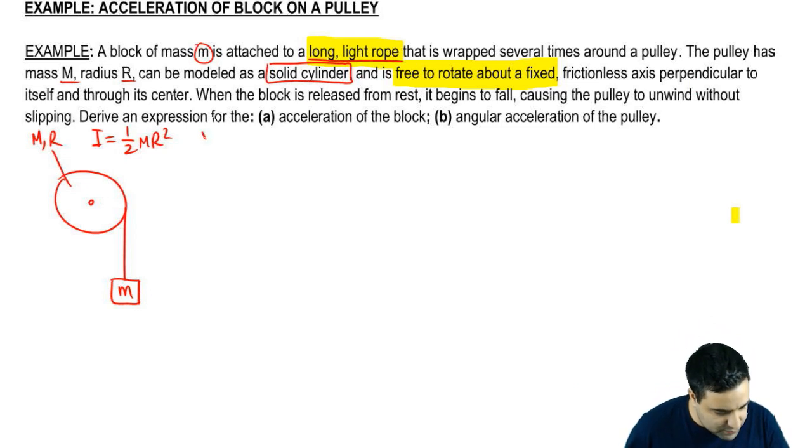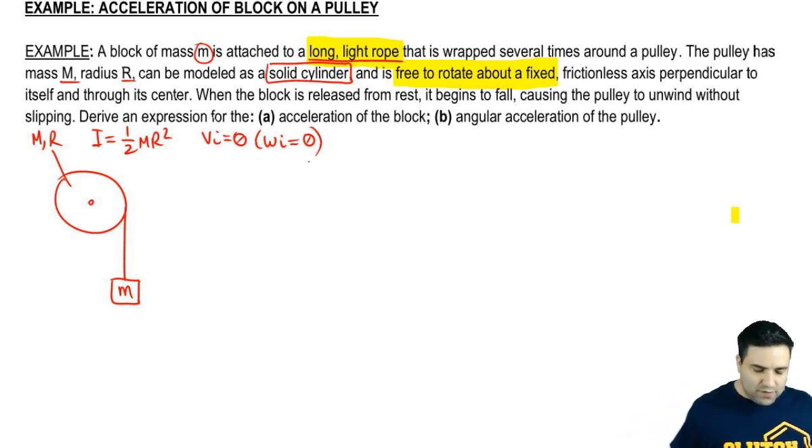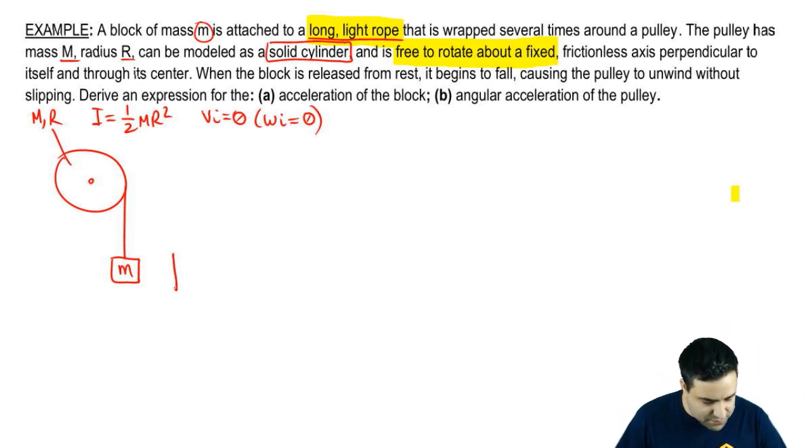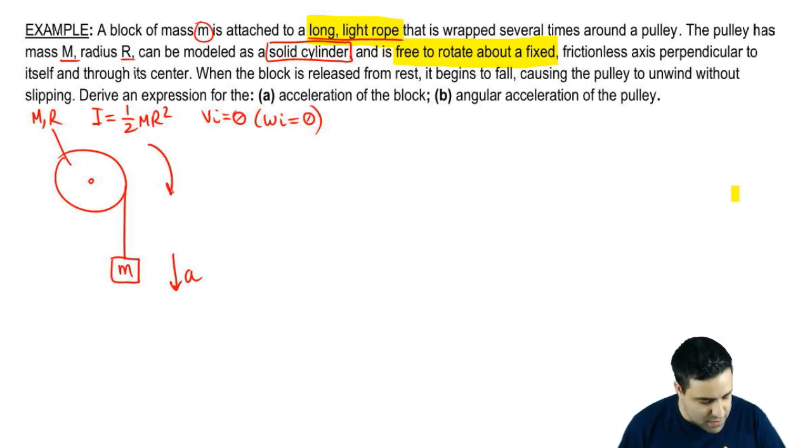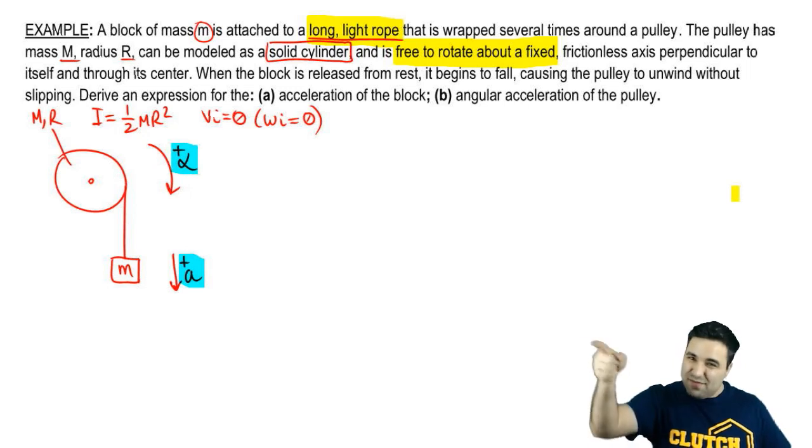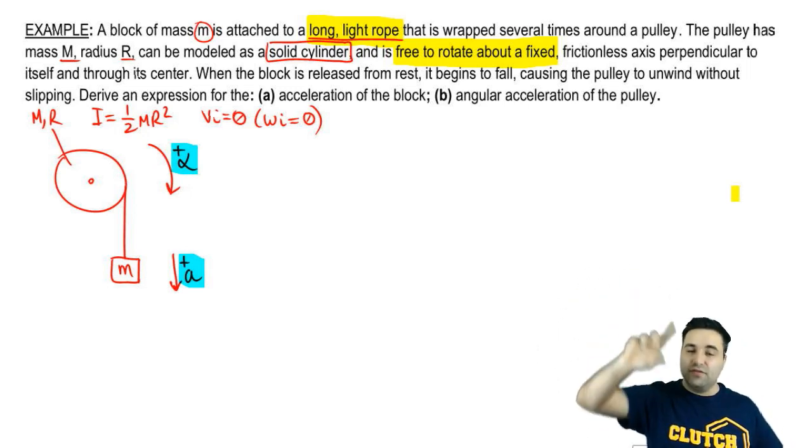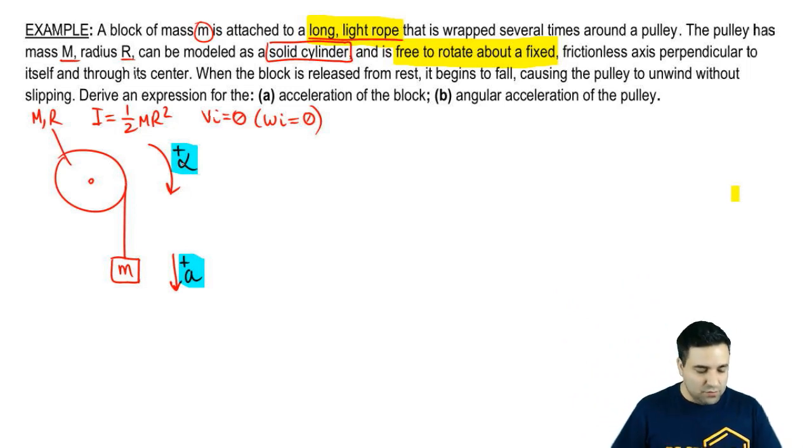It says that when the block is released from rest, so V initial equals zero. By the way, that also means that the omega initial of the disc is zero. It begins to fall, causing the pulley to unwind without slipping. So obviously as you release this, it begins to fall. In other words, there's an acceleration down. And because it's connected to the pulley, it's going to cause the pulley to spin. So I'm going to have an alpha this way as well. Remember, a and alpha have to match. We're going to choose the direction of positive to be the direction of acceleration, which means this has to be a plus and this has to be a plus. Both of these guys are pluses. Even though this is clockwise, which is usually negative, we're just going to override that convention and use our own convention here of saying acceleration is positive.